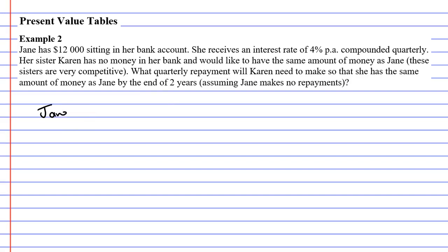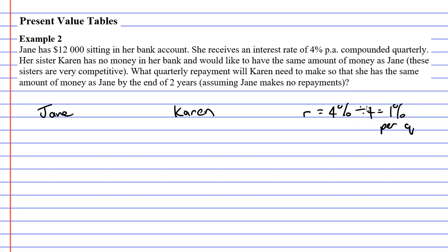Let's talk about what's happening with Jane and what's happening with Karen separately. They're both going to use the same bank, meaning they're both going to have the same interest rate. We know it's 4% per annum, but it's compounded quarterly. There are four quarters in a year, so we divide by 4, which gives us 1% per quarter. So both of them have an interest rate of 1% per quarter.